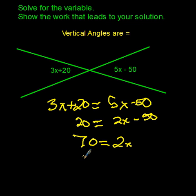Then I divide both sides by 2 and I get 35 for my value of x. That's all we have to do for that. But the main idea on this one is that vertical angles are equal. So knowing that tells me how to set up the equation and get started right from there.